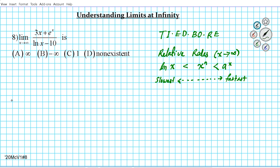Since we're looking at the limit as x approaches infinity, we want to look at the numerator and denominator and assess which terms are relevant towards infinity. We eliminate the others and compare the dominant terms from top and bottom using the TYBO table. In the numerator, there's a competition between a linear (power) function and an exponential — the exponential function is clearly going to dominate.